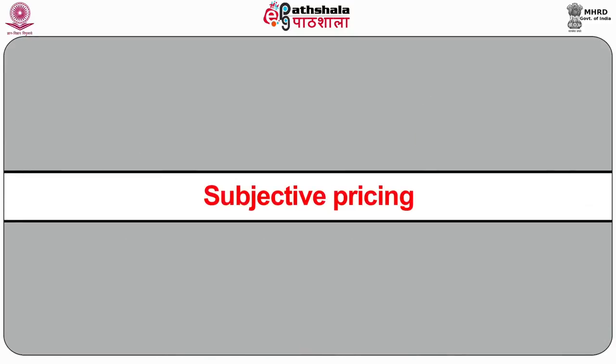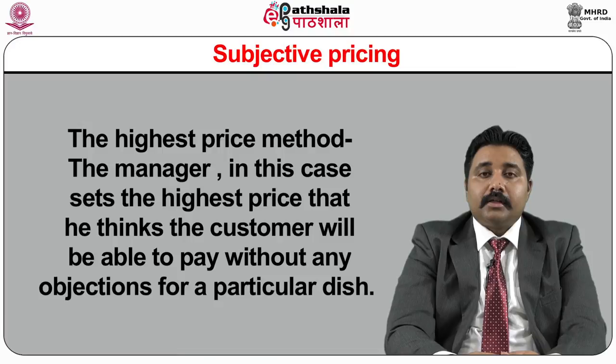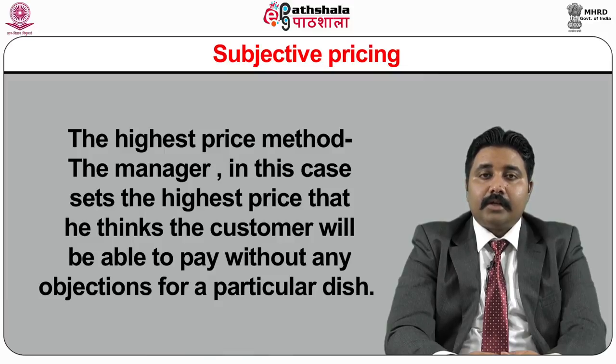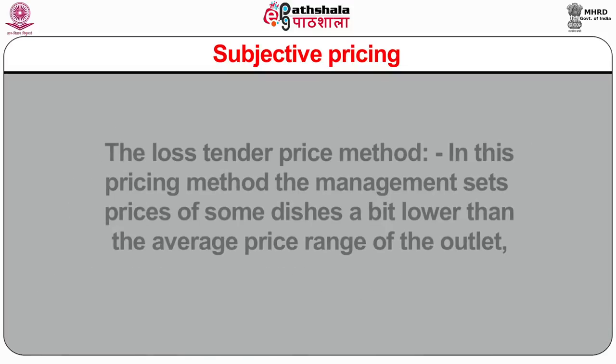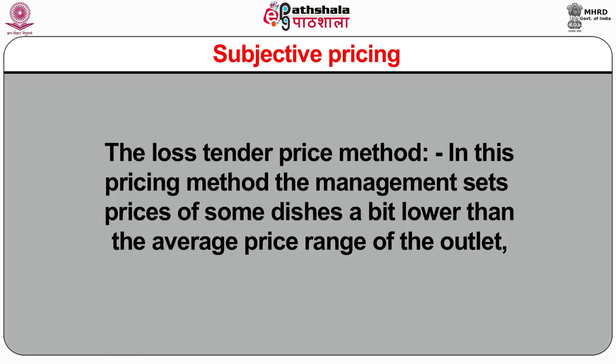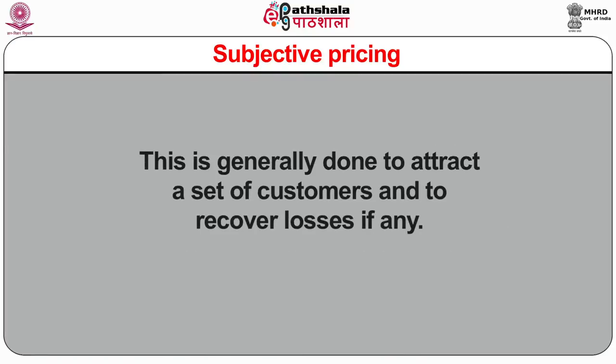Menu pricing methods include subjective pricing: the reasonable price method, which is made from the guest's perspective and planned on charges that are fair and unbiased; the highest price method, where the manager sets the highest price the customer will pay without objection for a particular dish; and the loss leader price method, where management sets prices of some dishes lower than the average price range to attract customers and recover losses.